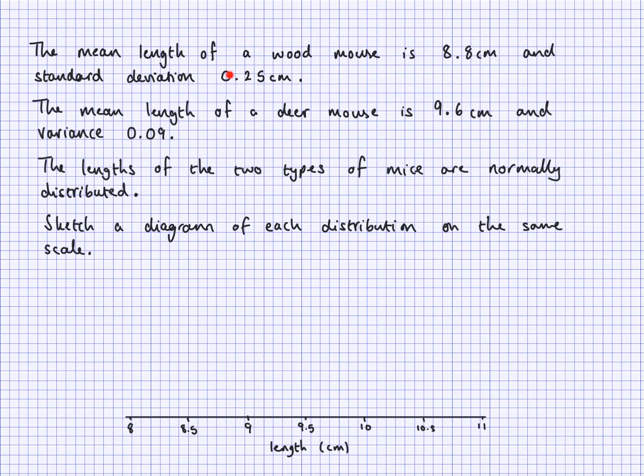So it says here the mean length of a wood mouse is 8.8 cm, and standard deviation for them is 0.25. The mean length of a deer mouse is 9.6 cm, and variance, notice that's different from the standard deviation, variance is 0.09.